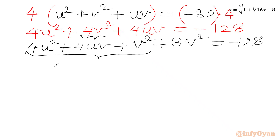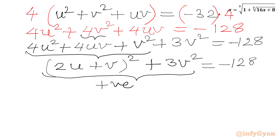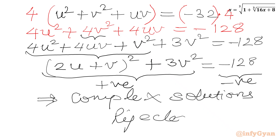From the first three terms we can write this is (2u plus v) whole squared. We can check: (2u)² is 4u², v² is v², and 2 times 2u times v is 4uv. So (2u plus v)² plus 3v² equal to minus 128. Now, the sum of two squares must always be positive for real values, but RHS is negative. So we are going to get complex solutions from this equation — we will reject this equation. The accepted value is u equal to v.